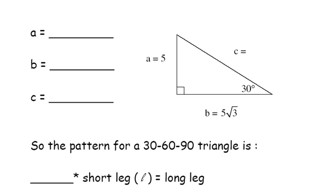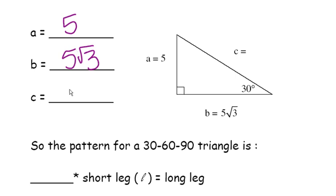One more 30-60-90 right triangle. A is 5, B is 5 radical 3. I need you to solve for C. You should have gotten that C equals 10.